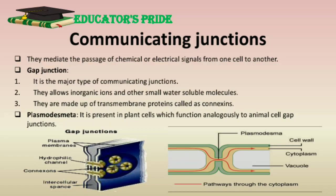The third type is communicating junctions. These mediate the passage of chemical or electrical signals from one cell to another. Gap junctions are the most common example of communicating junctions. Gap junctions serve as direct connections between the cytoplasm of adjacent cells, forming open channels through the plasma membrane, allowing ions and small molecules to diffuse freely between cells but preventing the diffusion of proteins and nucleic acids. In electrically excitable cells such as heart muscle cells, the direct passage of ions through gap junctions synchronizes the contraction of neighboring cells. Gap junctions also allow the passage of intracellular signaling molecules such as cyclic AMP and calcium ions between adjacent cells. The transmembrane proteins in gap junctions are called connexins. Six connexins assemble to form a cylinder with an open aqueous pore at its center, called a connexon. When connexons in the plasma membranes of two cells in contact are aligned, they form a continuous aqueous channel called a gap junction.